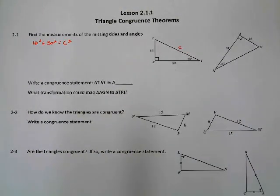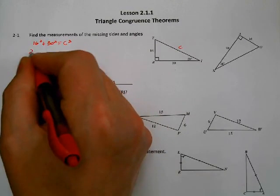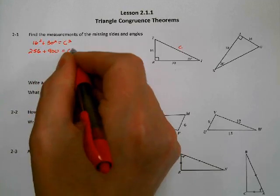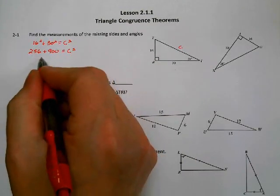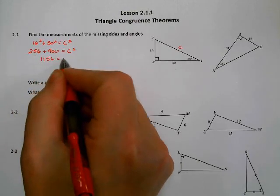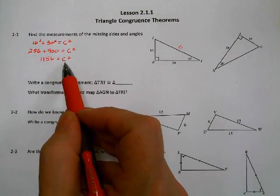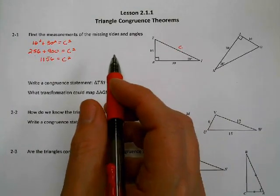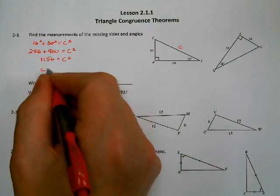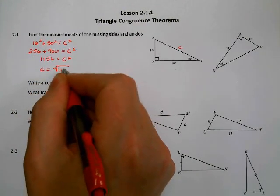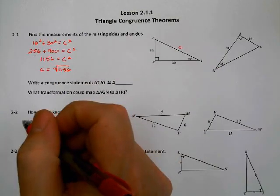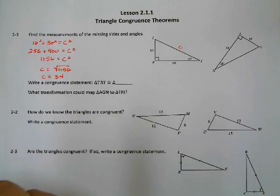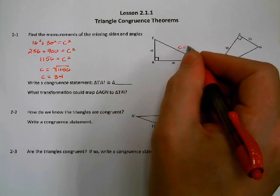Remember, this only works with right triangles. So we can do 16 squared plus 30 squared equals c squared to find this missing side. 16 squared is 256, 30 times 30 is 900, and that equals c squared. 256 plus 900 is 1156. To get c by itself, the opposite of squaring is square rooting, so c equals the square root of 1156. If you plug it into your calculator, that comes out to 34. So this last side is 34, and the other triangle also has sides 16, 30, and 34.